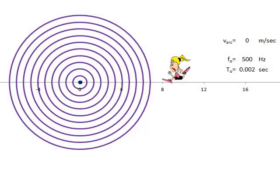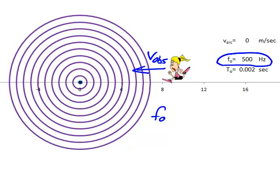First, let's consider what happens when the source of the sound is stationary and the observer is moving directly towards it. Let's define some variables. The source is vibrating with some frequency F-naught — in my simulation here, that's 500 hertz, 500 compressions created every second. That's the frequency the observer would hear too, if the observer weren't moving, but the observer is moving with speed v-obs towards the source.